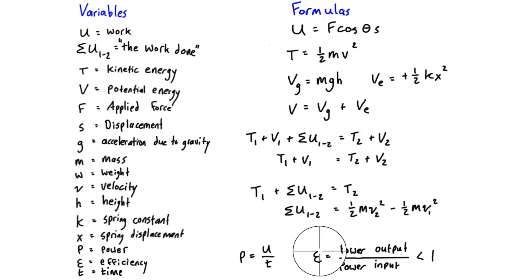Then here we have efficiency. Efficiency is just the ratio of power output over power input, and it's always going to be less than one because of losses due to friction. There's never going to be a case where you're going to get more power out than you put in in a motor or something like that.